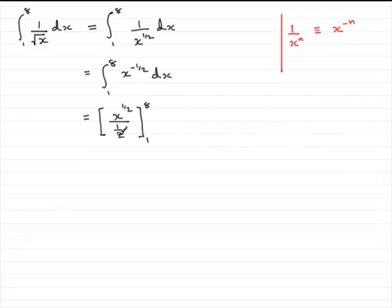Now, if you're dividing by a half, that's the same as multiplying by 2. So you've got 2x to the power half. Put that in as 2x to the power half, and we clean that up, going from 1 to 8.